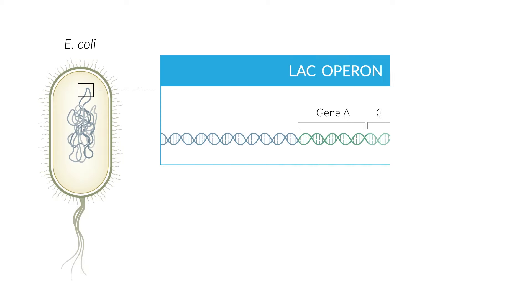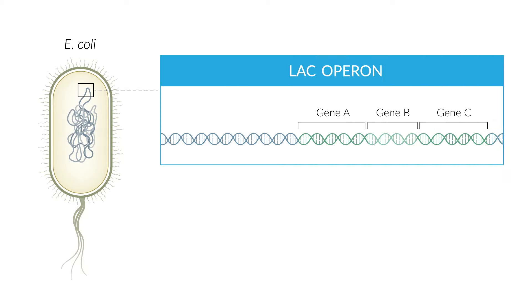The first fully described genetic regulatory mechanism is the LAC operon in E. coli bacteria. Today, it still represents an adequate model for prokaryotic gene regulation.